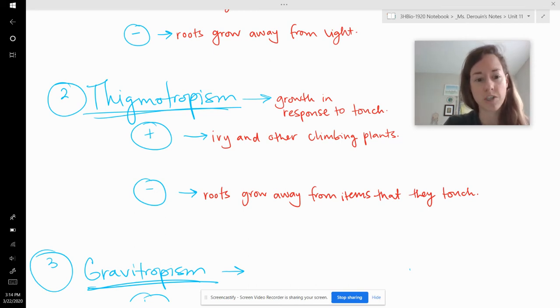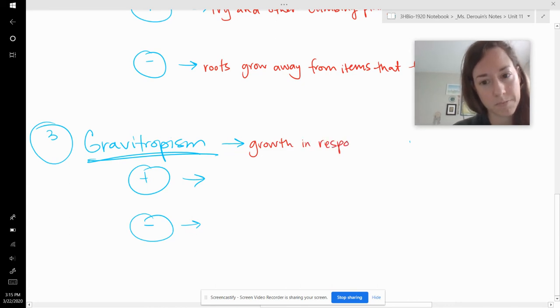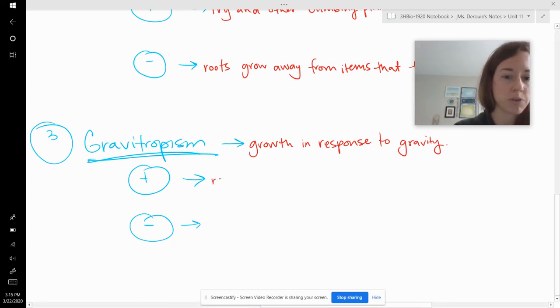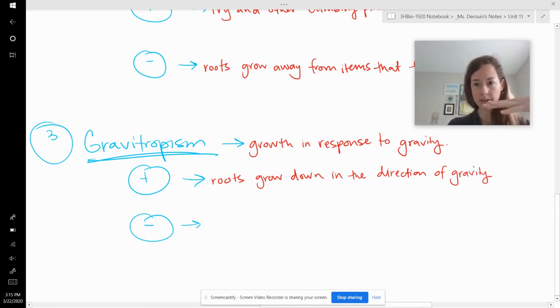And then the last one is gravitropism, which pretty obvious I think about what that's going to be. That is response to gravity, growth in response to gravity. And this example, positive gravitropism is going to mean that it's growing with gravity. And so the example for this one is roots grow down in the direction of gravity. So even if you turn a plant on its side, the roots will start to tilt downwards and grow downwards because of gravity.